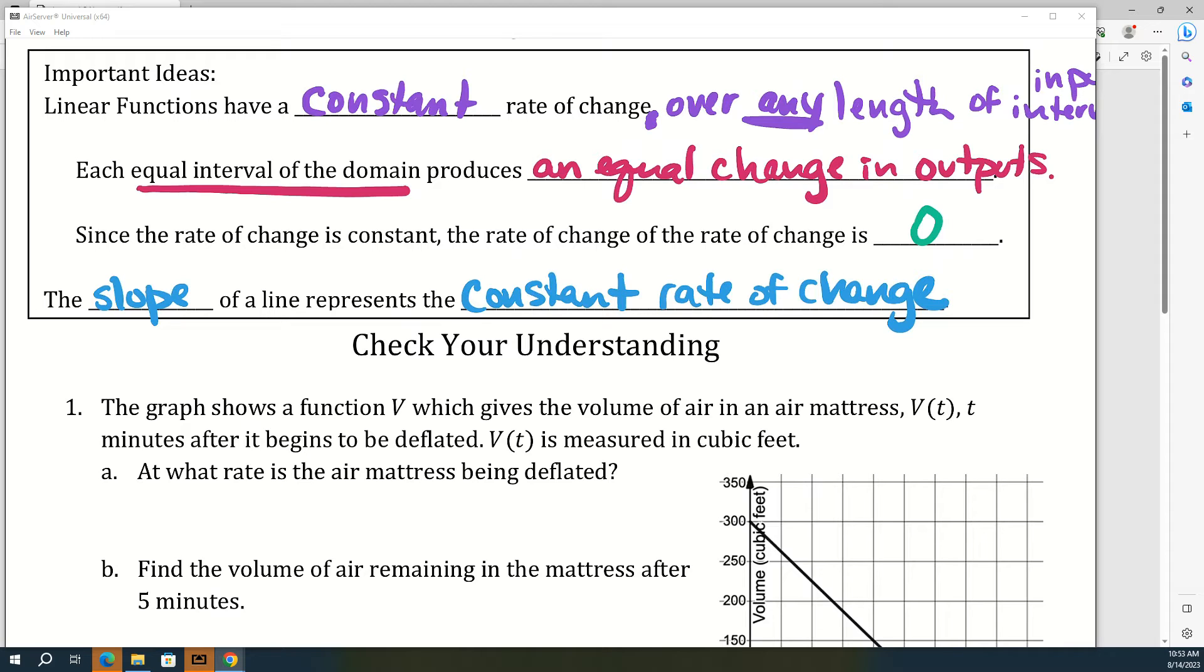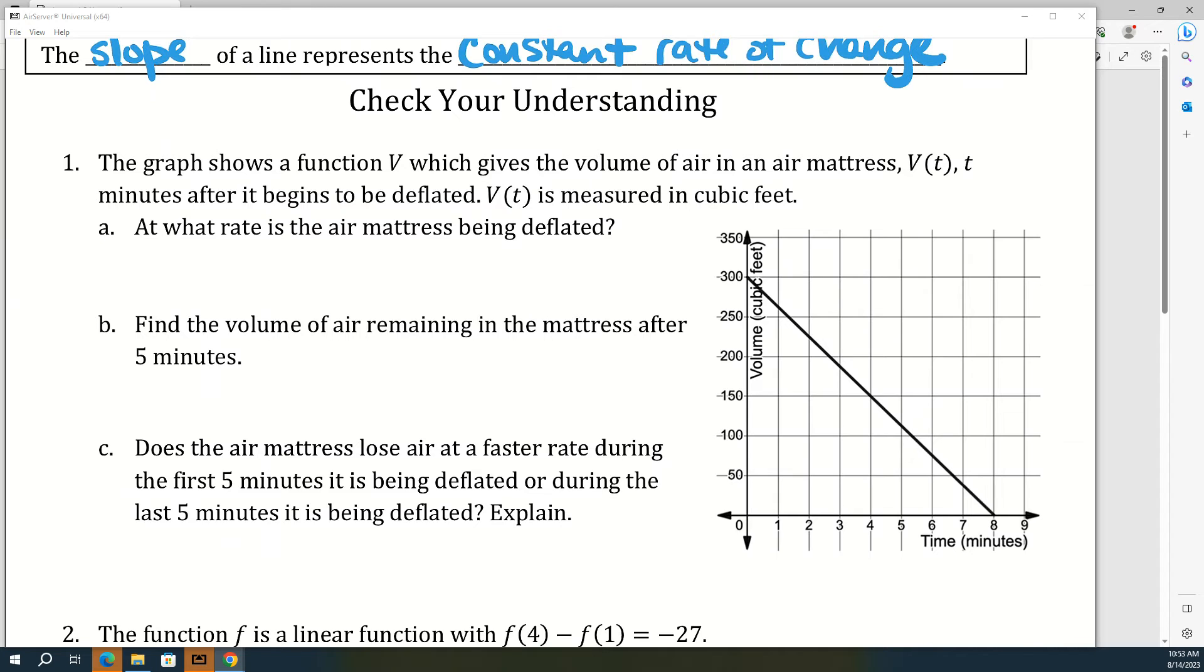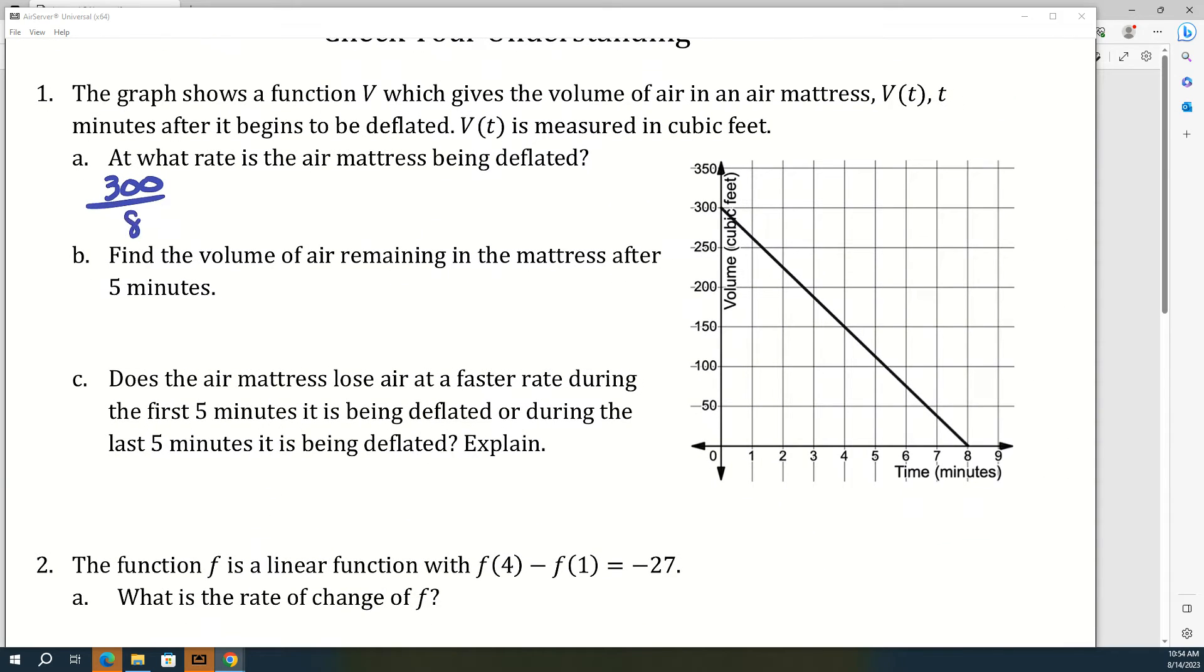Alright, so on number one, the graph shows a function v which gives the volume of air in an air mattress, v(t), t minutes after it begins to be deflated. v(t) is measured in cubic feet. So letter a asks at what rate is the air mattress being deflated? So how much air did you start with in this mattress? Does it look like 300? And then how long does it take for it to be completely deflated? Eight minutes. Eight minutes. Alright, so I did go ahead and divide that and I just gave a decimal. And then what would the units be? Cubic feet per minute.